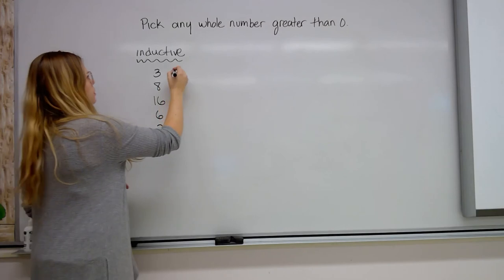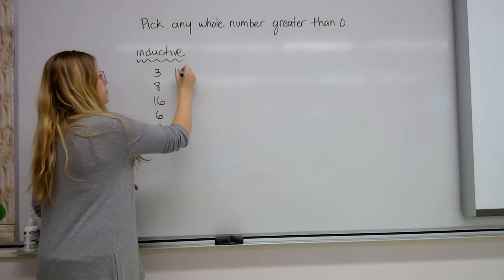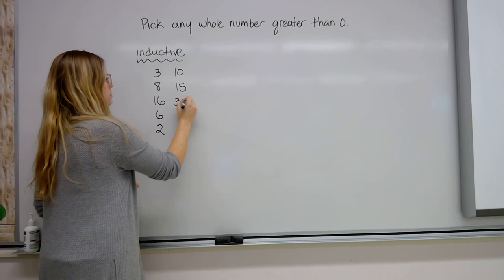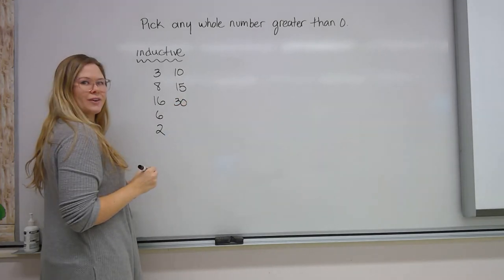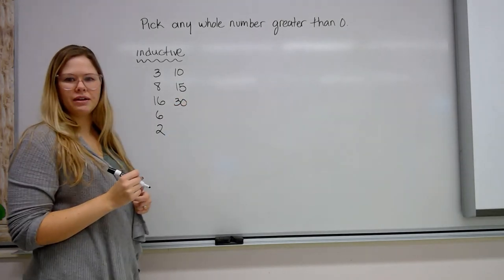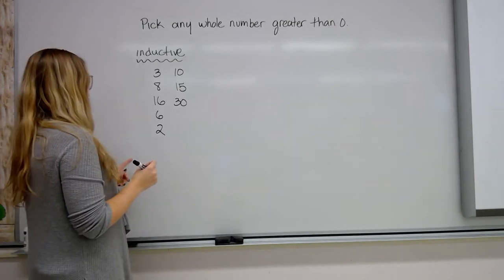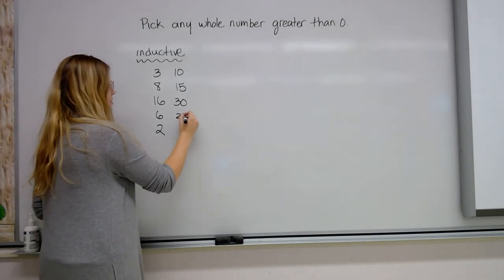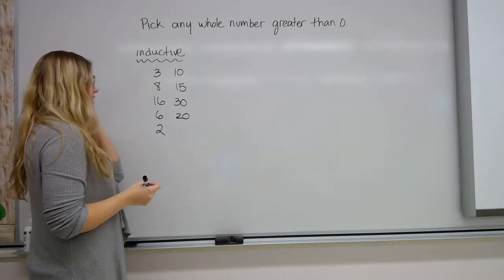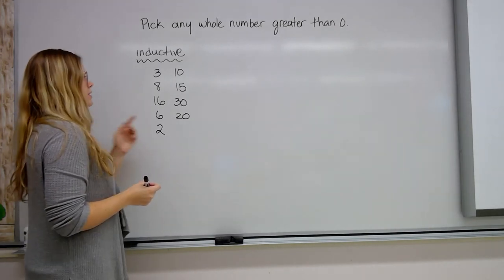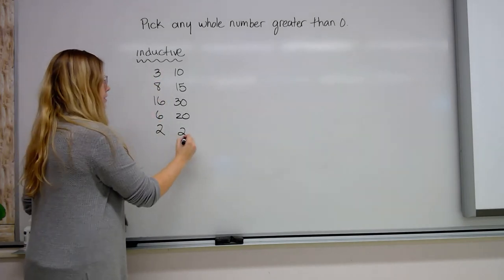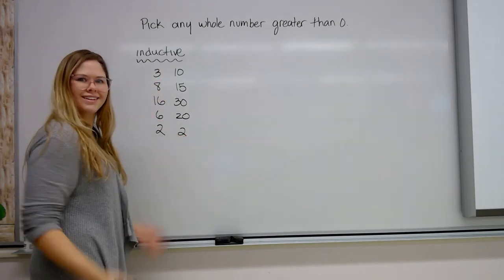If we pick another number — let's go with 10 — I'm going to add 5 to get 15, then multiply by 2 to get 30, subtract 10 to get 20, then divide by the original number: 20 divided by 10 is 2. It works again. But how do we prove that this is always going to work? This is where deductive reasoning comes in.